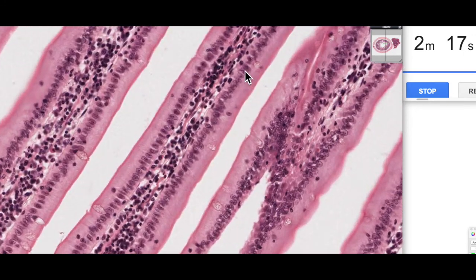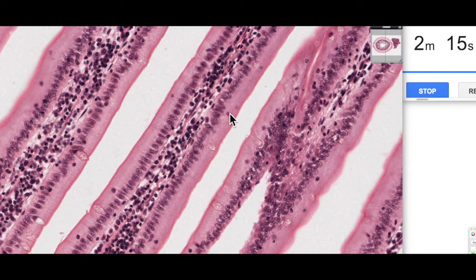We're zooming in here, this is a structure called a villus. It's a finger-like projection of epithelial cells. This is a simple columnar epithelium. You can see all the nuclei lined up like soldiers in a row standing at attention.